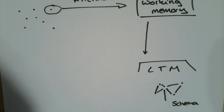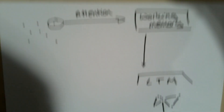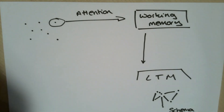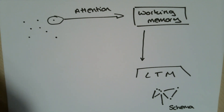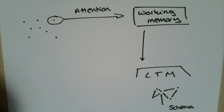The more sophisticated our schema the more expert that we are. In fact, experts not only have more knowledge but they have more connections between that knowledge, which means they are able to use their knowledge more flexibly. When we are thinking about our A-level students we want them to have sophisticated schemas similar to experts, because we want them to be able to use the knowledge that we have given them flexibly to answer any question in an exam.